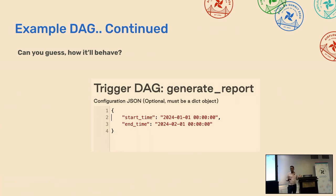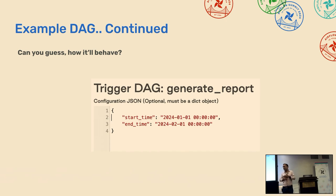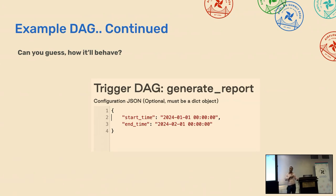Of course that is a solvable problem. One way is to add a Python task as the very first task in each DAG that does these validations. When the user triggers the DAG, the Python operator runs first, validates the parameters — checking if the time is correct, if the city code is proper — and fails early if something is wrong. But the problem with that approach is you have to add that Python task in each and every DAG, and if there's any new or changed parameter, you have to modify that task again, making it very tedious.